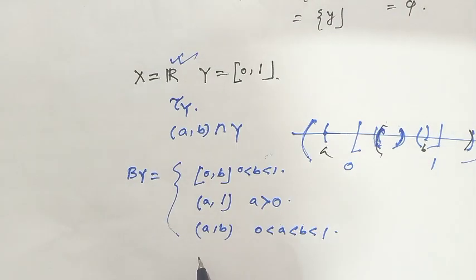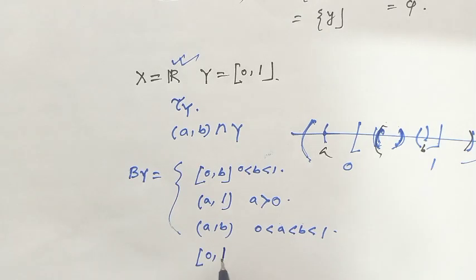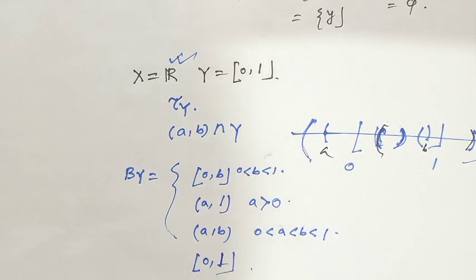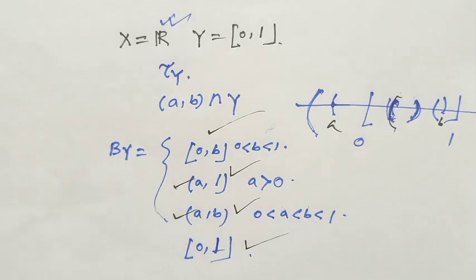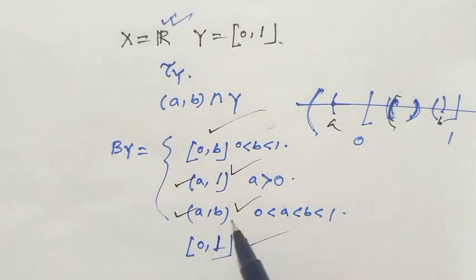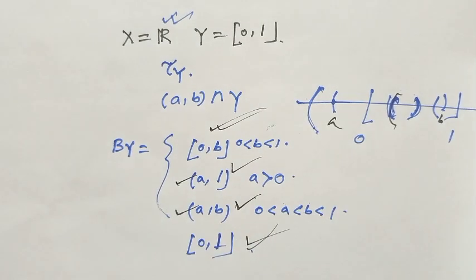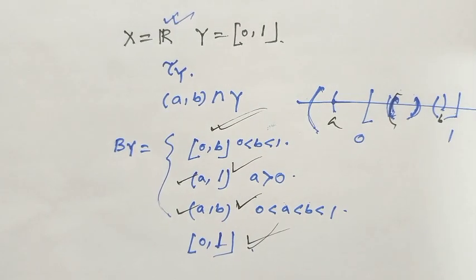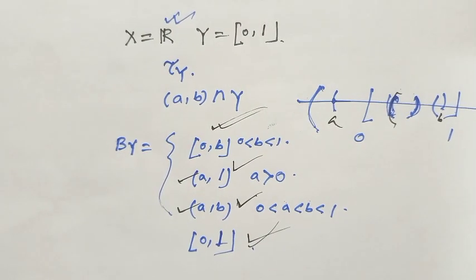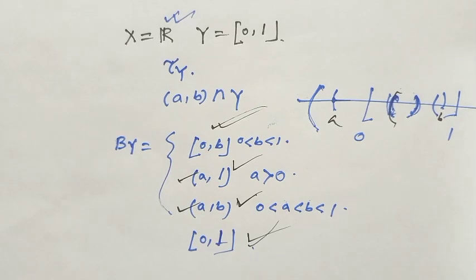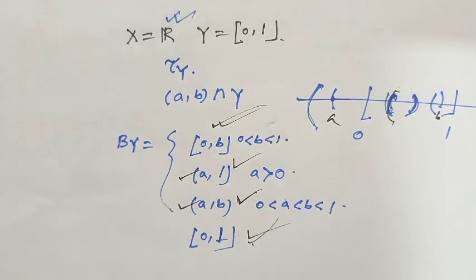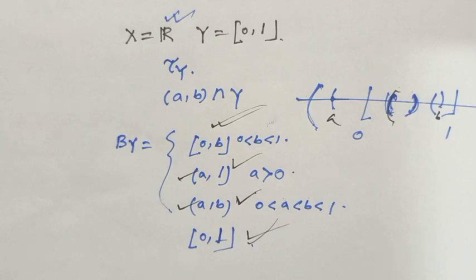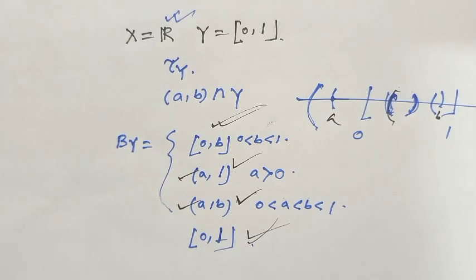The closed interval [0, 1] is not an open set in the real numbers with the standard topology, but it is an open set in the subspace topology. The subspace topology on R as the x-axis in R² — here the subset is the whole x-axis and the ambient topology is that of the whole R² plane. Any open sphere in R² which intersects the x-axis gives an open interval. So the subspace topology on R (inherited from R²) is actually the usual topology on R, which is the standard topology — all open intervals.